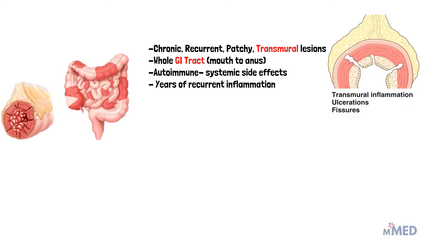Crohn's disease is an autoimmune disease, so it has more systemic side effects than ulcerative colitis, and usually there are years of recurrent inflammation. What is meant by transmural is that it involves all the layers of the GI tract, and not just the mucosa and submucosa.